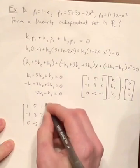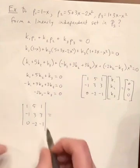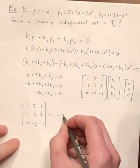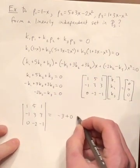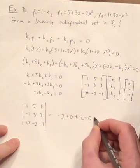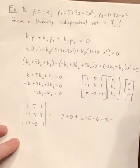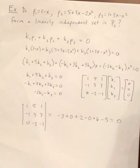and show what that ends up being. So I get negative 3 plus 0 plus 2 minus 0 plus 6 minus 5. And notice that that does end up equaling 0.